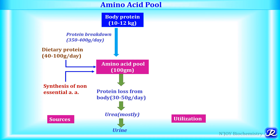So every adult has about 1 gram per kg per day as the recommended dietary allowance for protein.